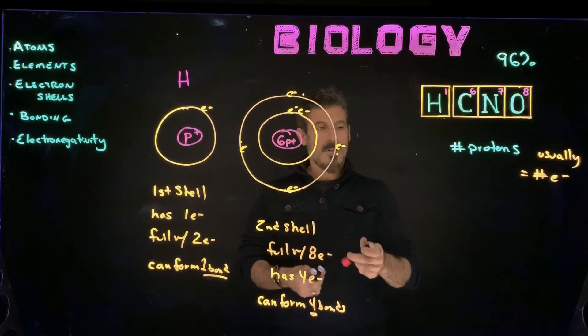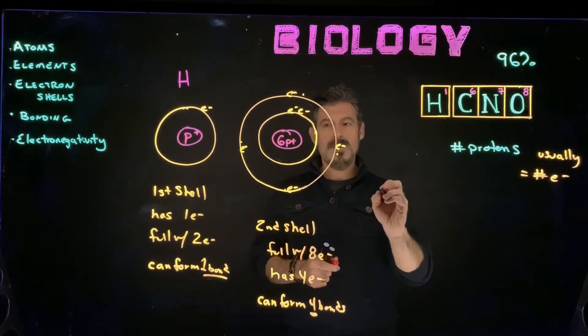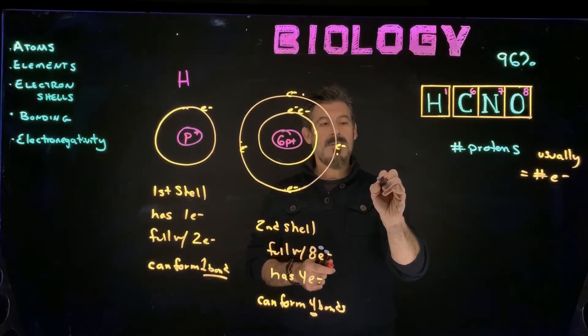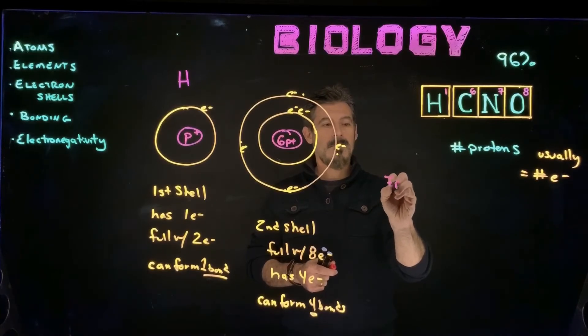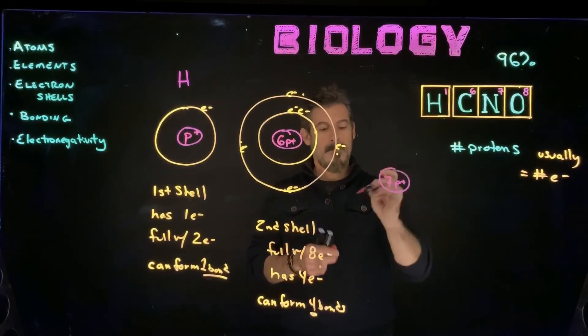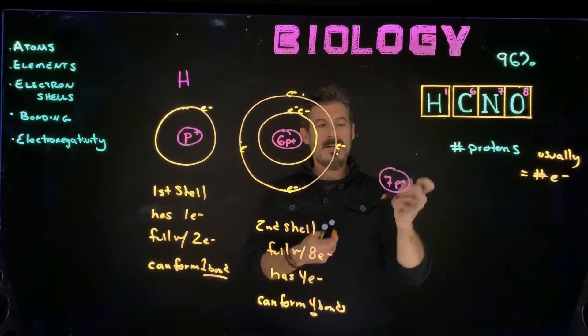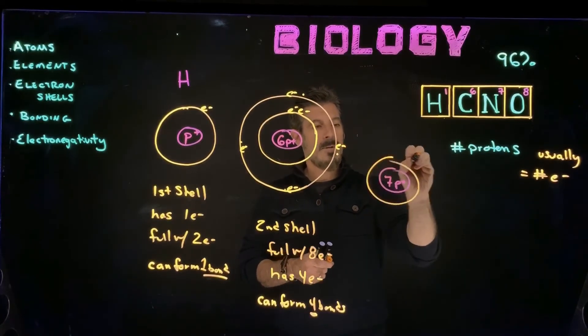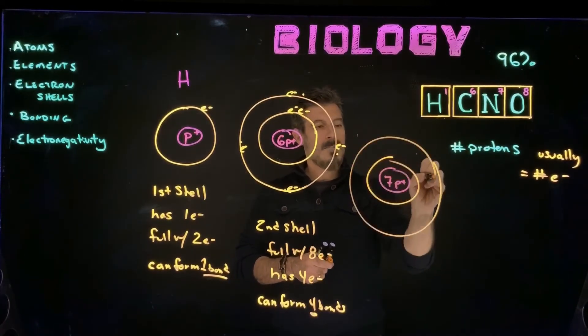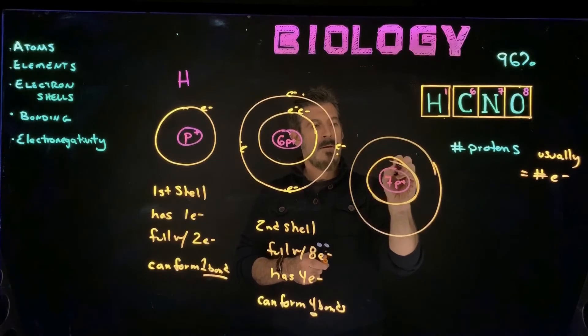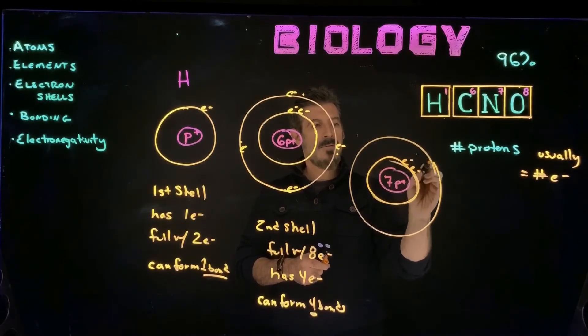Nitrogen, kind of go through this here. You should be able to then draw these in the end yourself. Same thing, we're going to have seven, seven protons, and then we just kind of add it in another. So we go one, two.